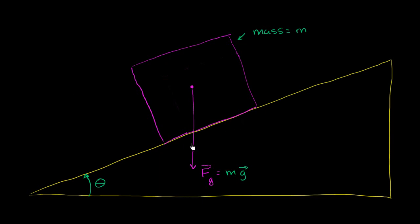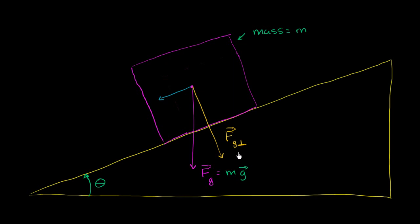Let's break this force vector — the force due to gravity — into a component that is perpendicular to the surface of this ramp, and another component that is parallel to the surface of this ramp. I'll use a little unconventional notation: I'll call the perpendicular component the force due to gravity perpendicular to the ramp, using an upside-down T symbol, and the parallel component using two vertical bars to indicate parallel.